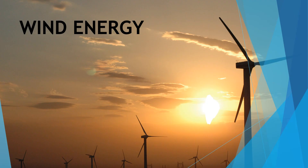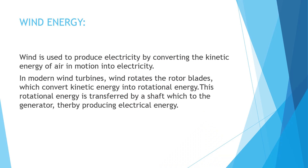Now let's see about wind energy. Wind is used to produce electricity by converting the kinetic energy of air in motion into electricity. In modern wind turbines, wind rotates the rotor blades which convert kinetic energy into rotational energy. This rotational energy is transferred by a shaft to the generator, thereby producing electrical energy.